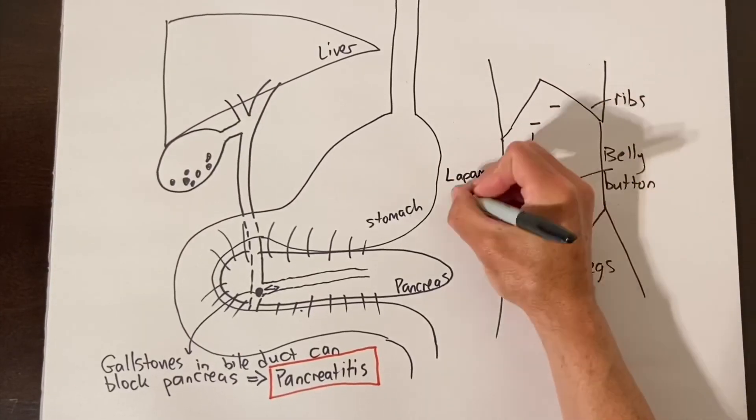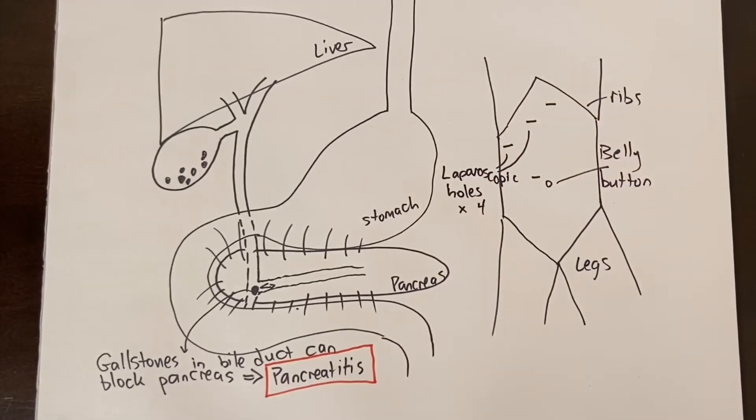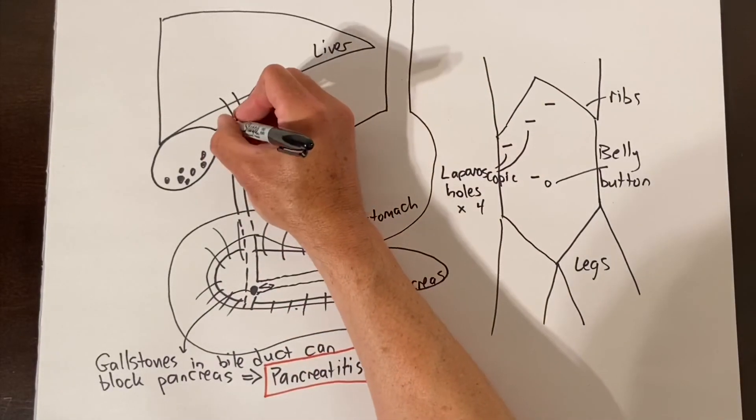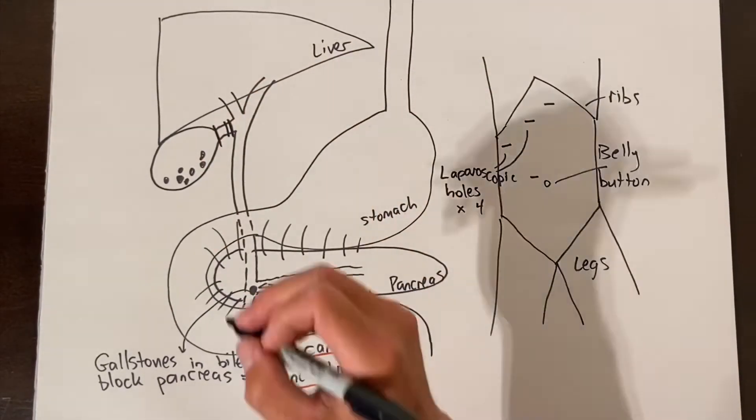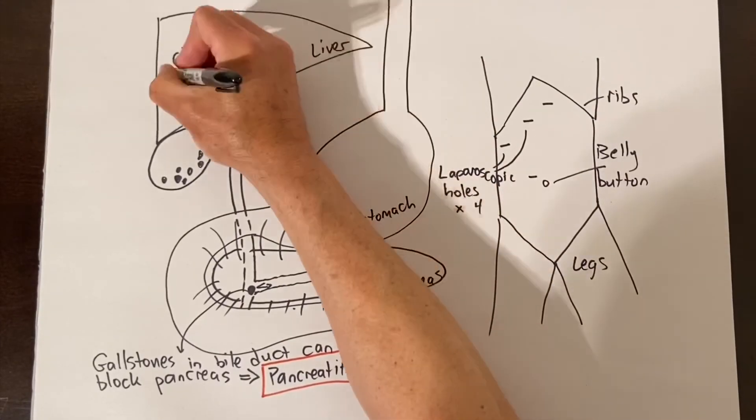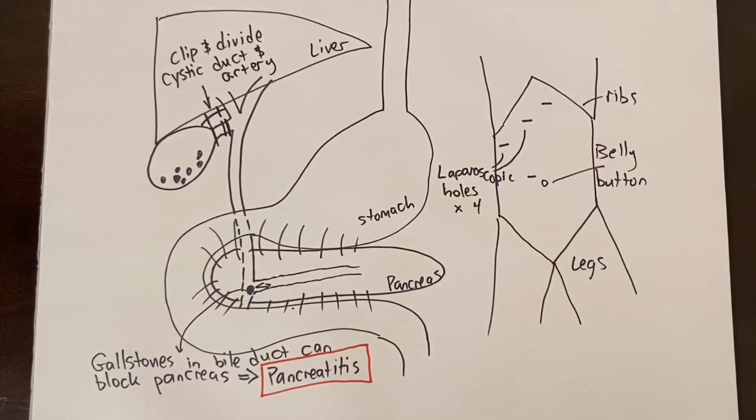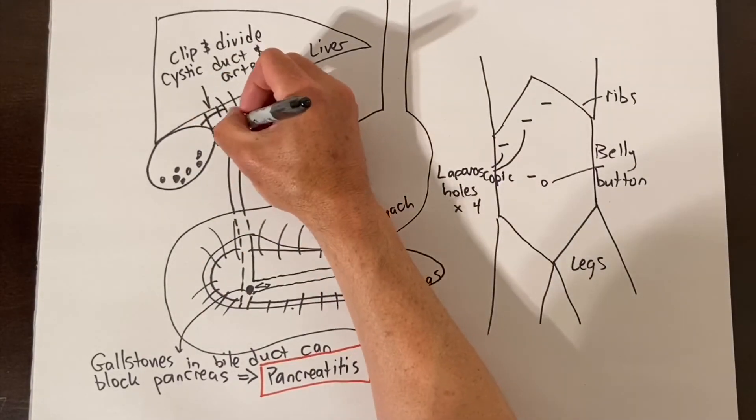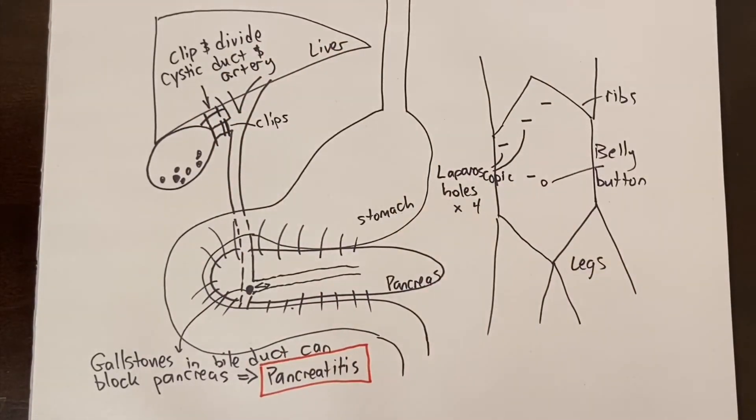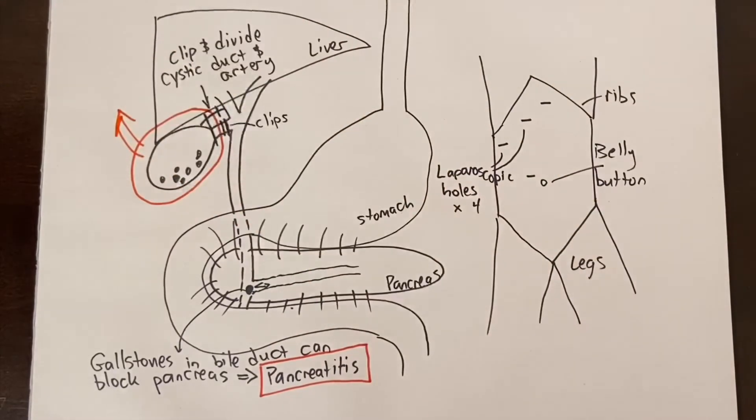The most common laparoscopic cholecystectomy approach is to make four small holes in the abdomen and using laparoscopic long skinny instruments we isolate the cystic duct that connects the gallbladder to the main bile duct. We place clips on this duct to prevent bile from leaking backwards out of it and then divide it. There is a small artery coming into the gallbladder that is also divided.